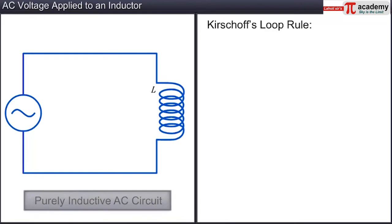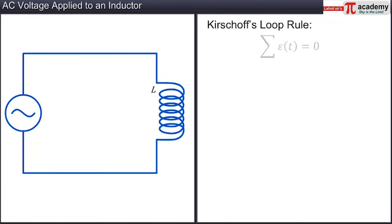According to this rule, the sum of potential differences across various components is zero. The voltage across the source of alternating current is V equal to Vm sine omega t, where Vm is the amplitude of the AC voltage, omega is the angular frequency, and t is the time. Let this be equation 1.